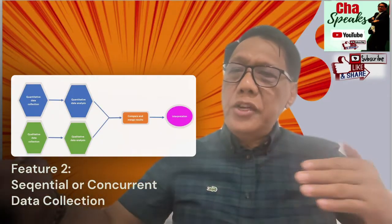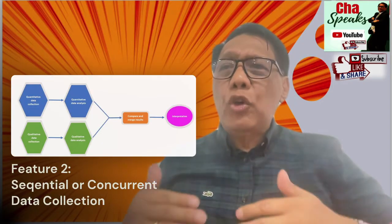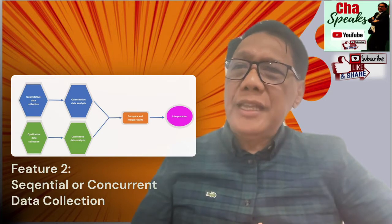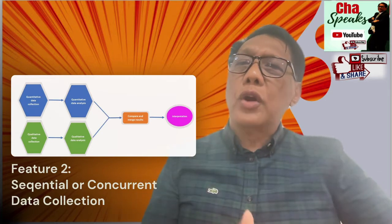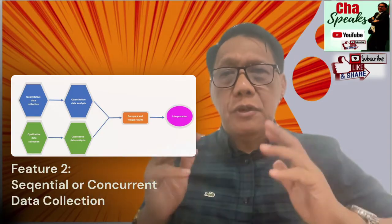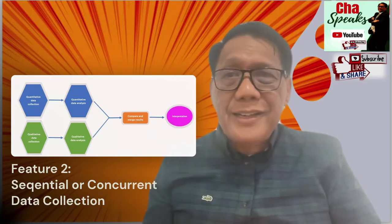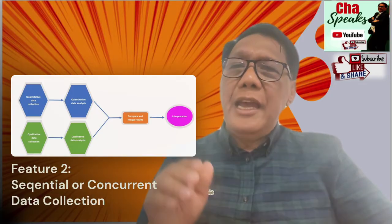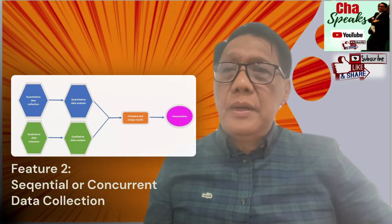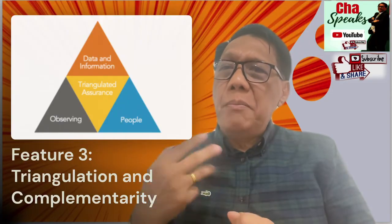Second, Sequential and Concurrent Data Collection. Another important feature of mixed methods is the flexibility it offers in terms of data collection. Researchers can choose to collect quantitative and qualitative data sequentially — one after the other — or concurrently, meaning simultaneous gathering of both types of data. This flexibility allows researchers to adapt their data collection methods to the specific needs of their research project, ensuring they capture the most relevant and comprehensive data possible.